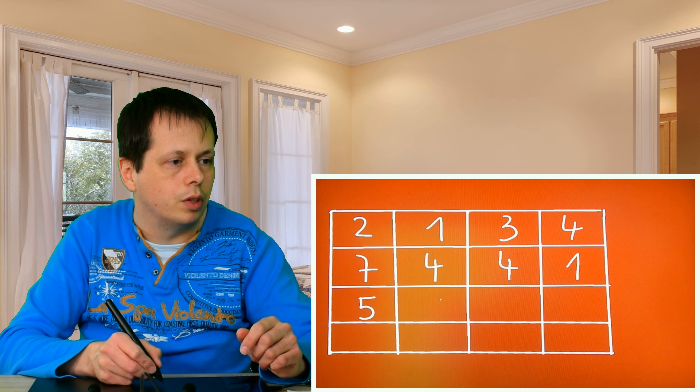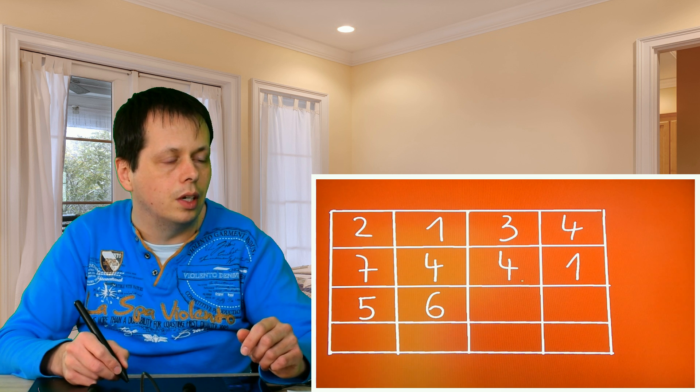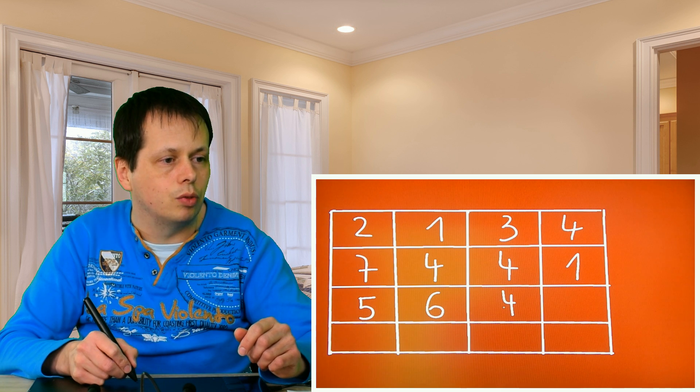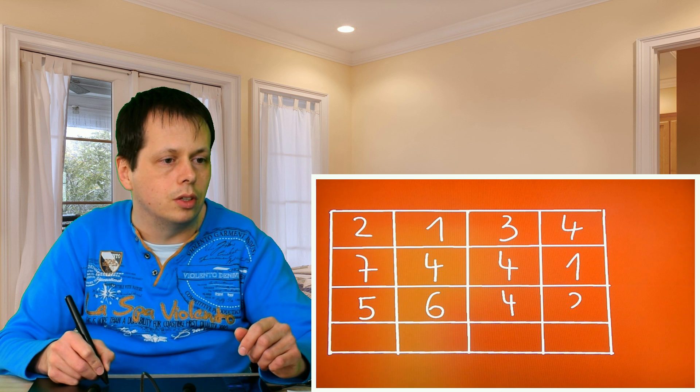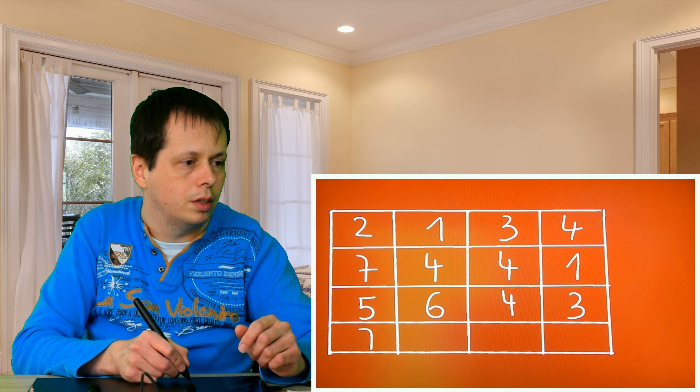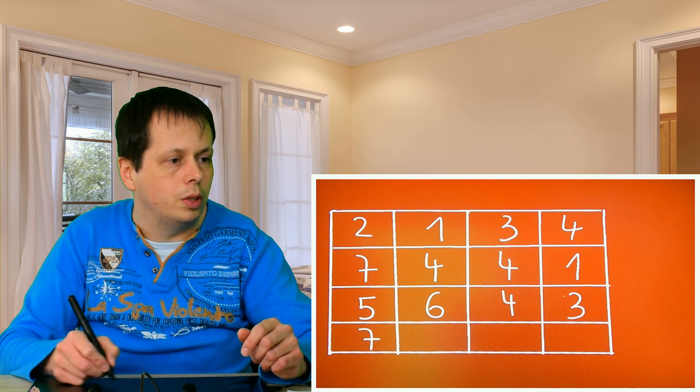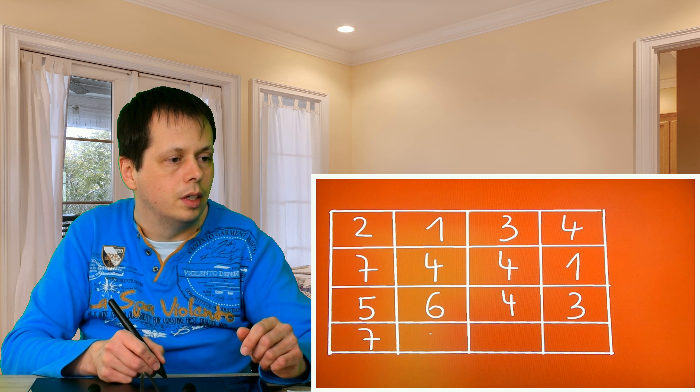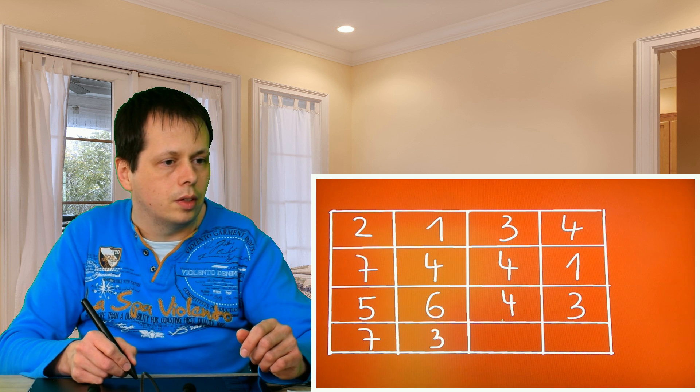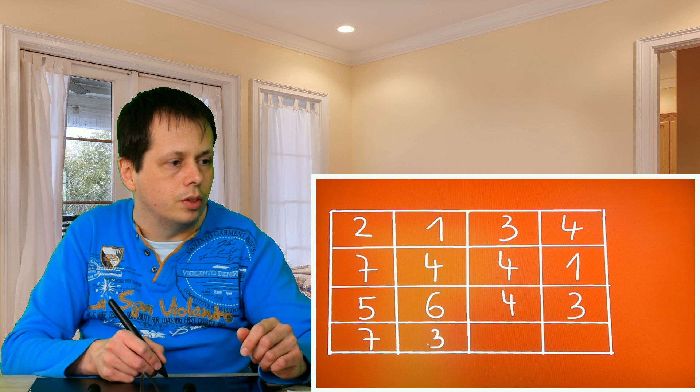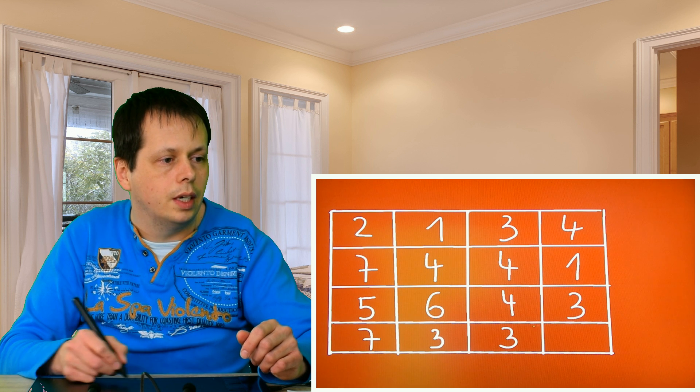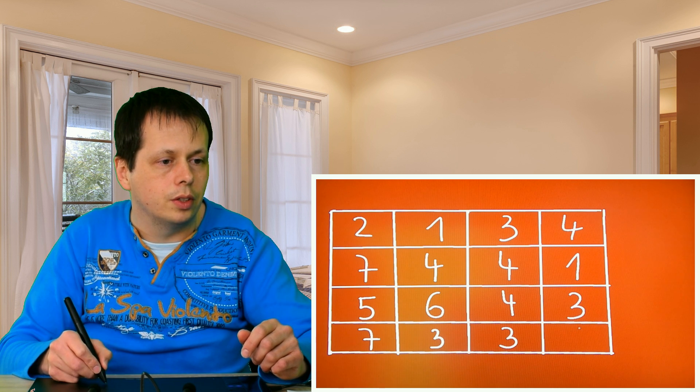And seven and four is again eleven minus seven is again four. Four and four is eight minus seven is one. Four and one is five, one and five is six, five and six is eleven so minus seven is four. Six and four is ten minus seven is three. Four and three is seven and three and seven is ten minus seven is three. Seven and three is again ten minus seven is three, and three and three is six.